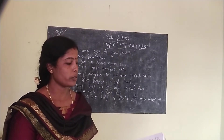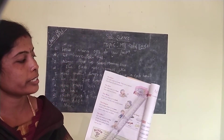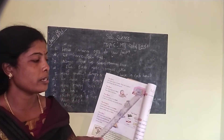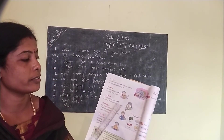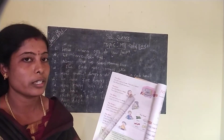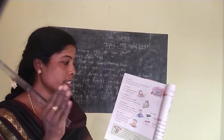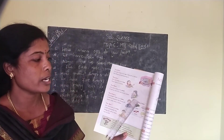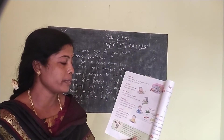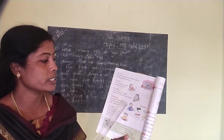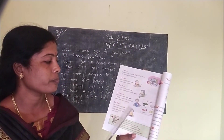Now, we should know in detail about the sense organs. First, the eyes. The boy is watching the TV. Our eyes help us to see. We see anything with our eyes. They tell us about the things we are looking at. Next, the boy is hearing the sound with a phone. Our ears help us to hear — they help us to listen. Next, the girl smells the flower fragrance. Our nose helps us to smell. It tells us that the rose smells so sweet. Next, tongue.